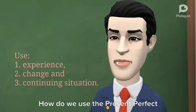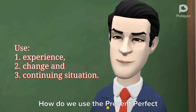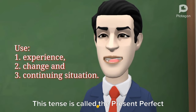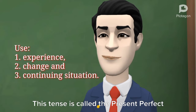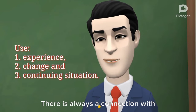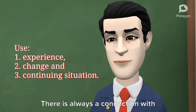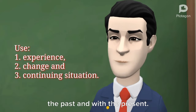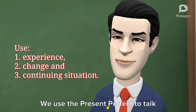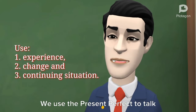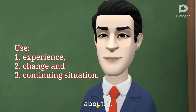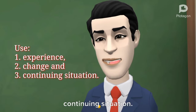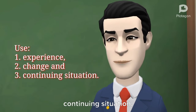How do we use the Present Perfect Tense? This tense is called the Present Perfect Tense. There is always a connection with the past and with the present. We use the Present Perfect to talk about: 1. Experience, 2. Change, and 3. Continuing Situation.